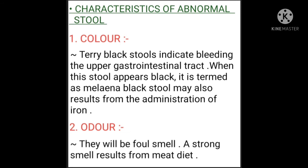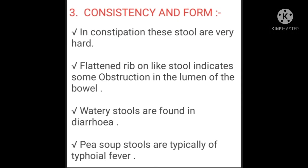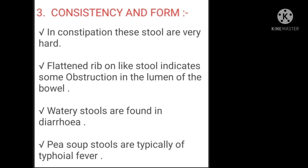Characteristics of abnormal stool — first is color: tarry black stools indicate bleeding in the upper gastrointestinal tract; when stool appears black it is termed melena. Black stools may also result from the administration of iron. Odor: there will be a foul smell; a strong smell results from a meat diet. Consistency: in constipation, stools are very hard. Flattened ribbon-like stools indicate some obstruction in the lumen of the bowel.